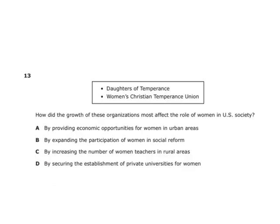Daughters of Temperance, Women's Christian Temperance Union — how did the growth of these organizations most affect the role of women in U.S. society? It expanded the participation of women in social reform. Temperance meant fighting for people to stop drinking as much alcohol. Social reform means trying to change and better society, and these women were participating in the temperance movement as a form of social reform.